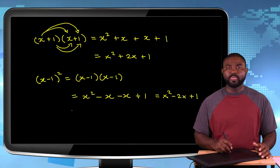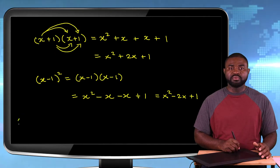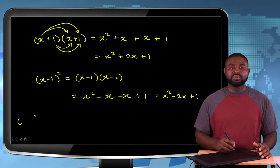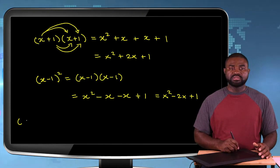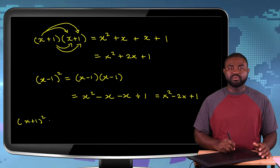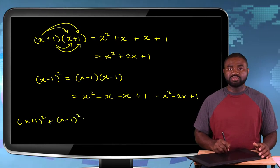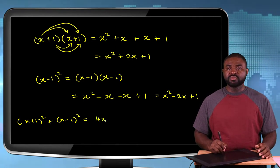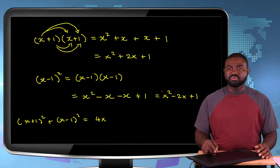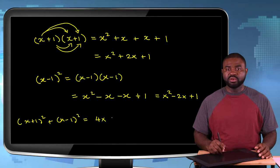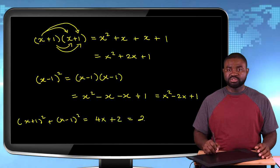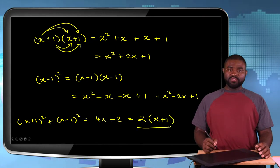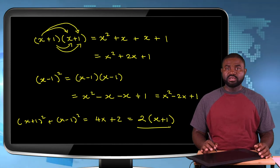So if we add X plus 1 all squared plus X minus 1 all squared, we add X squared plus 2X plus 1 and X squared minus 2X plus 1. The 2X and minus 2X cancel to zero, giving us 2X squared plus 2, which is the same as 2 bracket X squared plus 1. That is our answer.